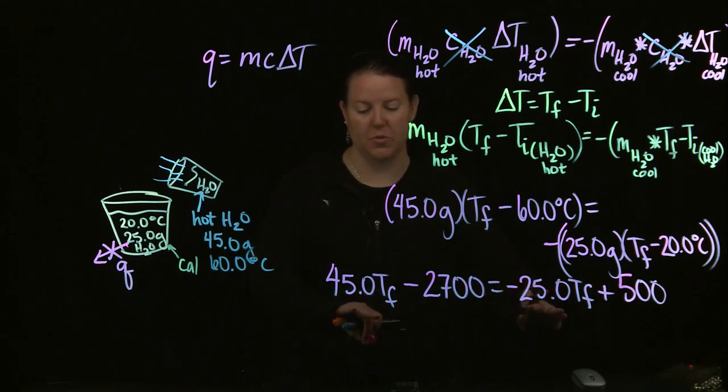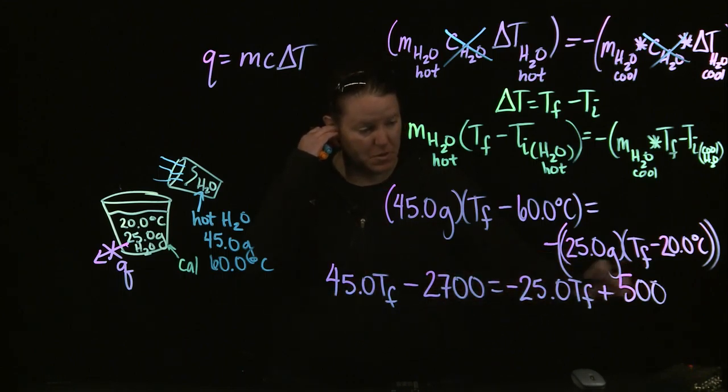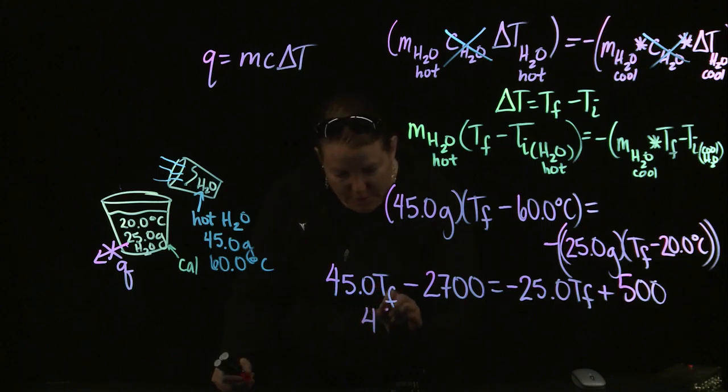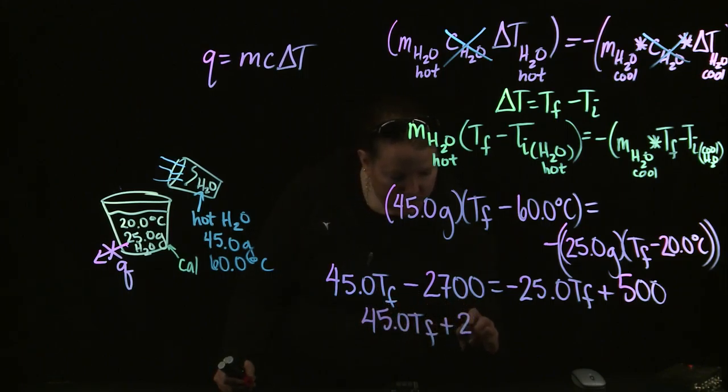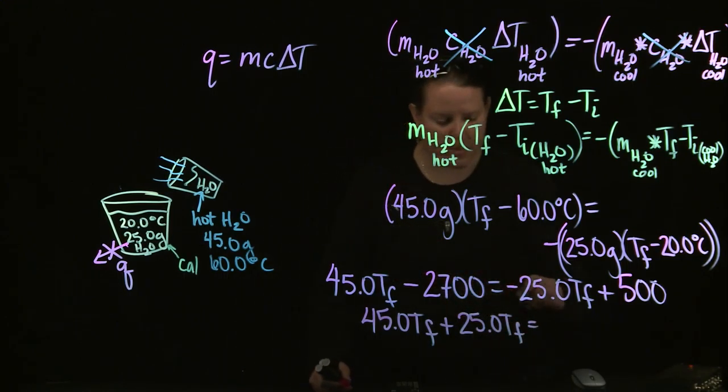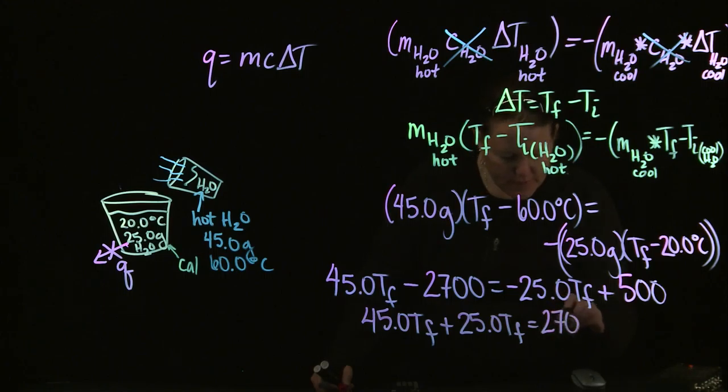45.0 T_F plus 25.0 T_F, I put that to the opposite side, equals 2700.